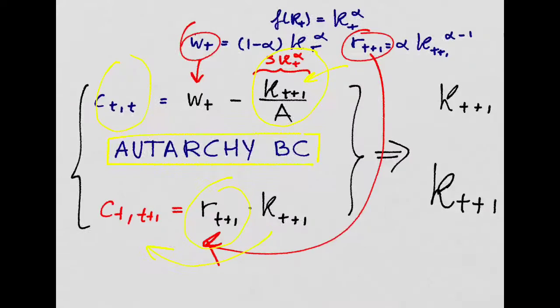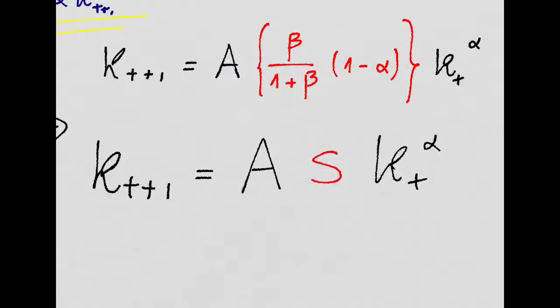Of course, as we usually assume, this wage is just going to be the marginal product of labor, and the interest rate on the capital is just going to be the marginal product of capital. Thus, in this closed economy, we will end up having this law of motion for the capital stock, which means that the country just saves a constant fraction of the country's income.